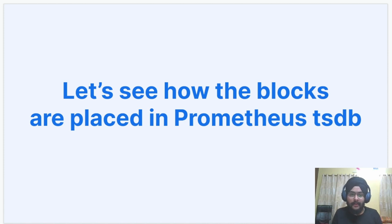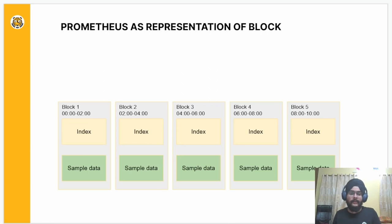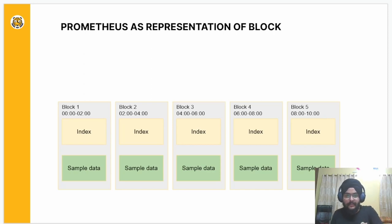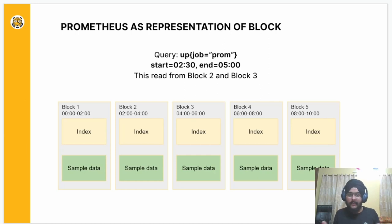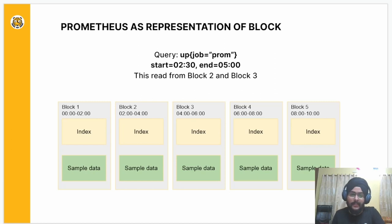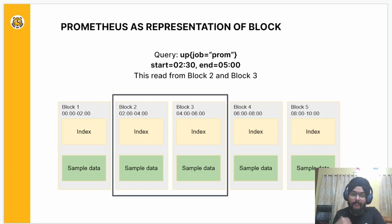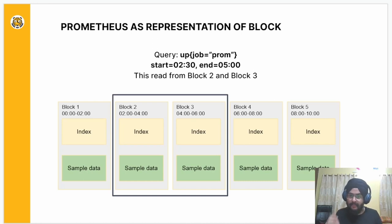Let's see how the blocks are placed inside Prometheus TSDB. Blocks in Prometheus TSDB are collections of index and sample data which we discussed previously. Now imagine Prometheus gets a query — say 'up' with a label job equals prom — which has a start at two hours and 30 minutes and ends at five hours. Block two and block three overlap with the query's time range, which means we will consider block two and block three for the evaluation of the received query.